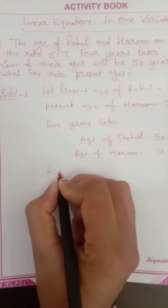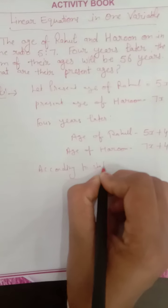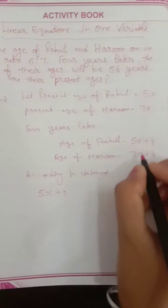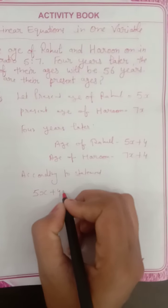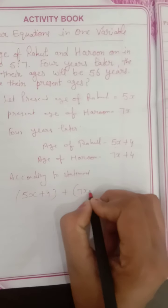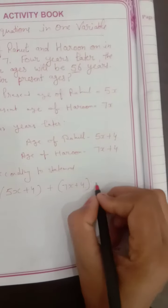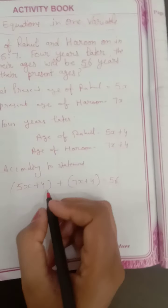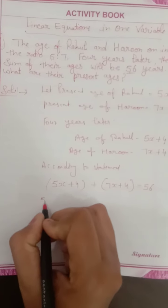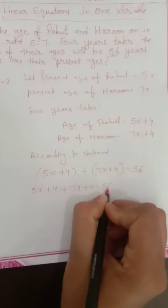According to the statement, we write the equation: 5x plus 4 plus 7x plus 4 is equal to 56.